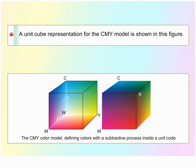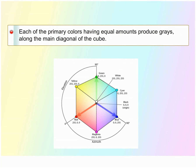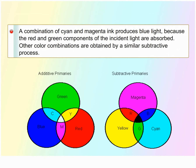A unit cube representation for the CMY model is illustrated in a figure. In the CMY model, (1,1,1) represents black because all components of the incident light are subtracted. The origin represents white light. Equal amounts of each of the primary colors produce grays along the main diagonal of the cube. A combination of cyan and magenta ink produces blue light because the red and green components of the incident light are absorbed. Other color combinations are obtained by a similar subtractive process.